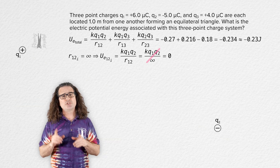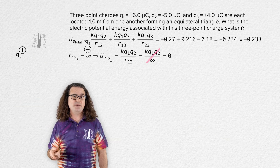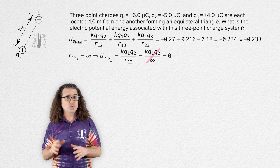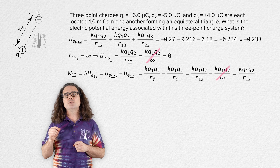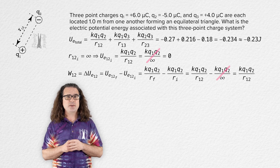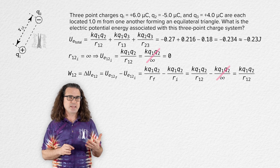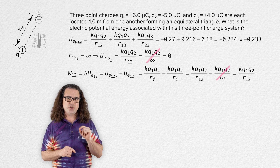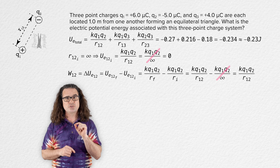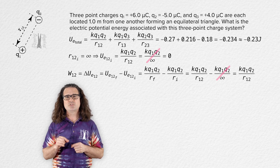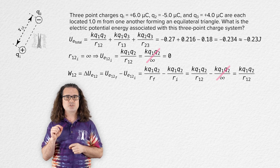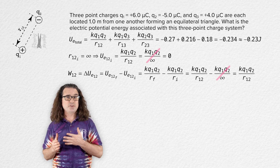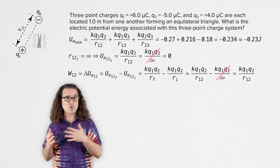To move charge two at a constant velocity to a final distance r12 from charge one, it requires an external force to do work on charge two, and that work equals the change in electric potential energy of the charge one and charge two system. In other words, the work done by the external force changes the electric potential energy of that system by an amount equal to the Coulomb constant times charge one times charge two divided by distance r12. That is just the electric potential energy of the two-charge system made up of charge one and charge two.